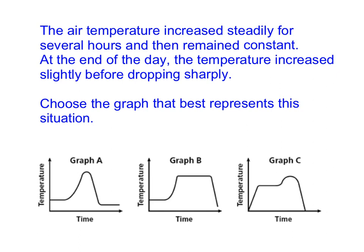So now we're going to look at an example. It says the air temperature increased steadily. I'll even circle some words as we go along. It increased steadily for several hours and then remained constant. If I were to draw this off on the side, increasing steadily means it's going to go up, remaining constant, no change, horizontal.